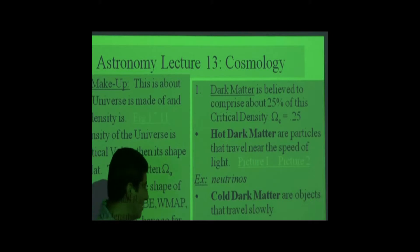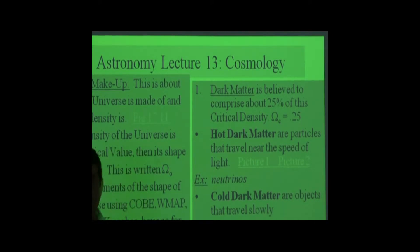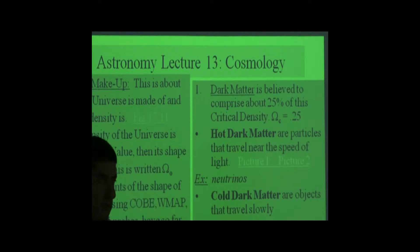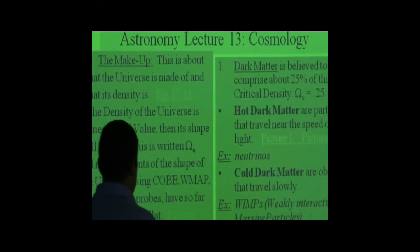Cold dark matter are proposed, and they travel very slowly. Examples of those, wimps and machos.